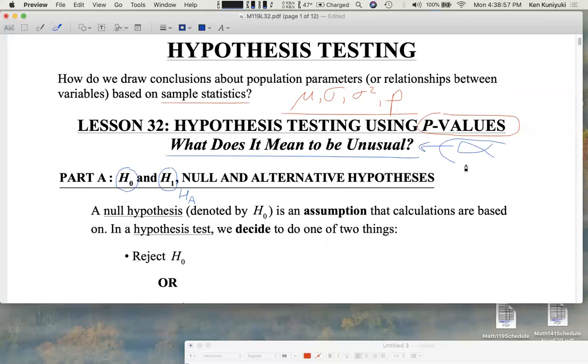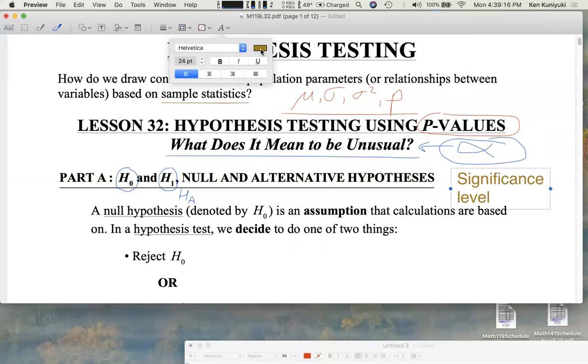And also alpha, which is going to represent the significance level. We're going to meet him formally in just a moment. We've seen him before. It was the complement of the confidence level before when we did confidence intervals. We're now going to meet alpha officially when we talk about significance level. And again, that's the measure for what it means to be unusual.